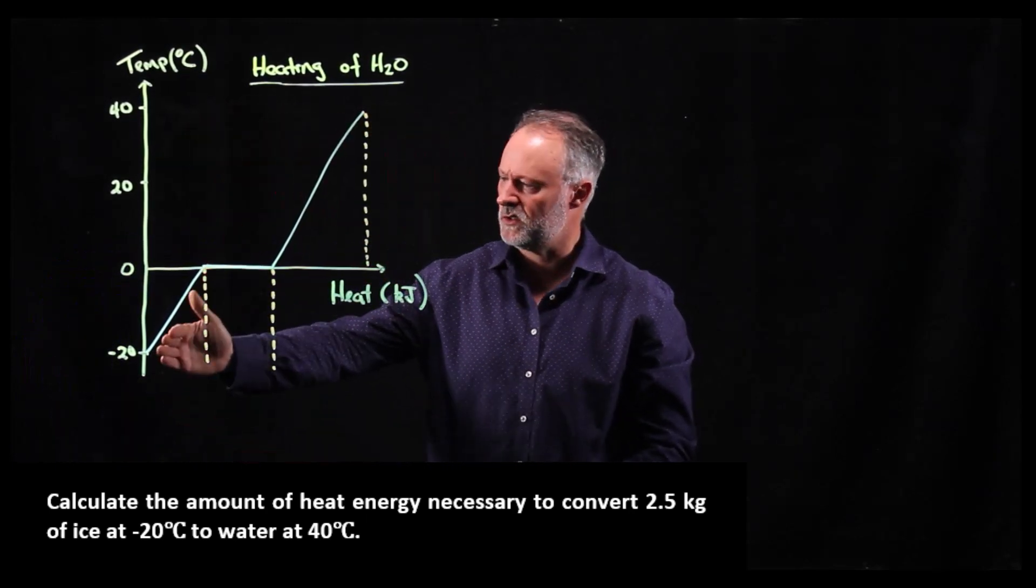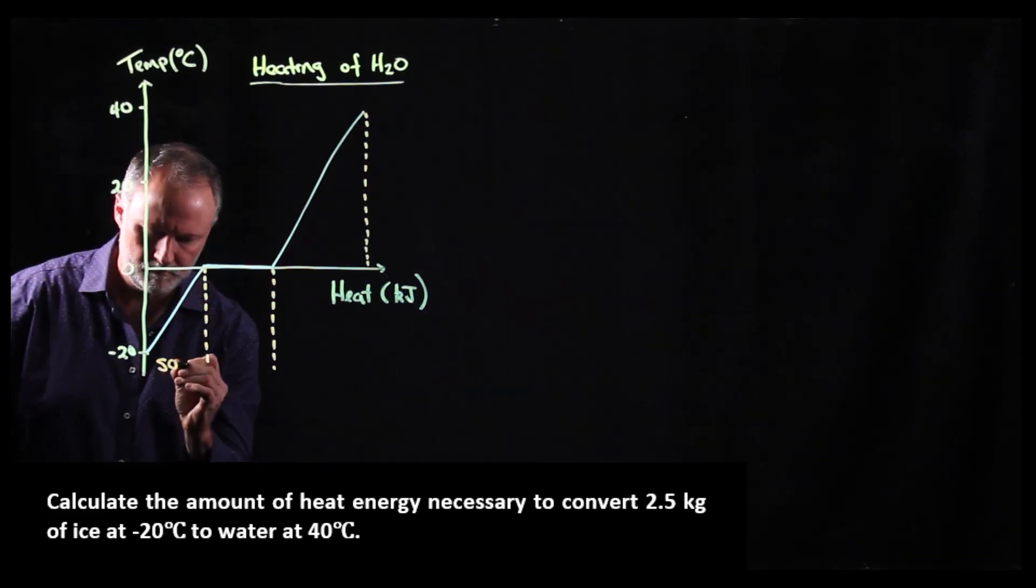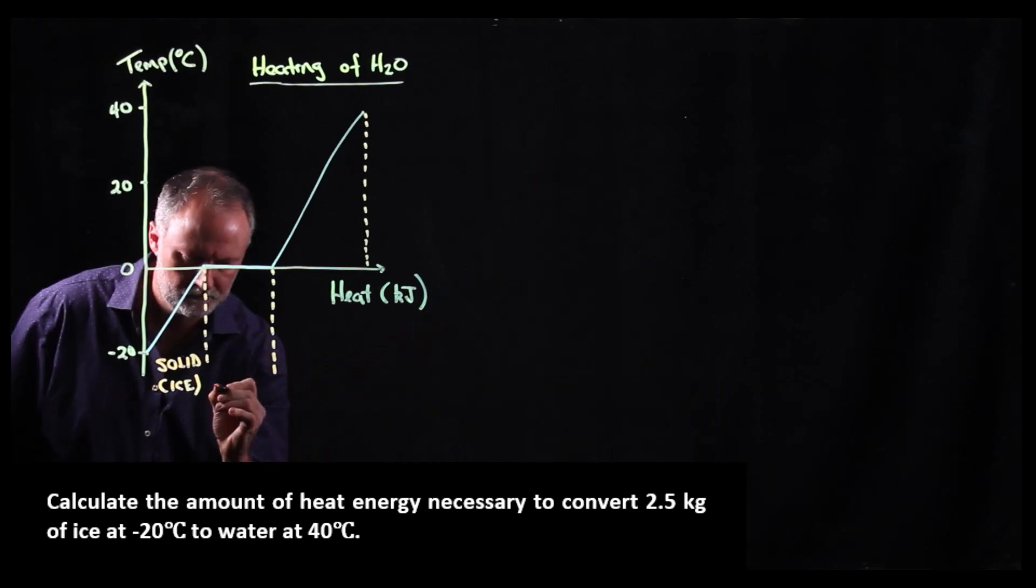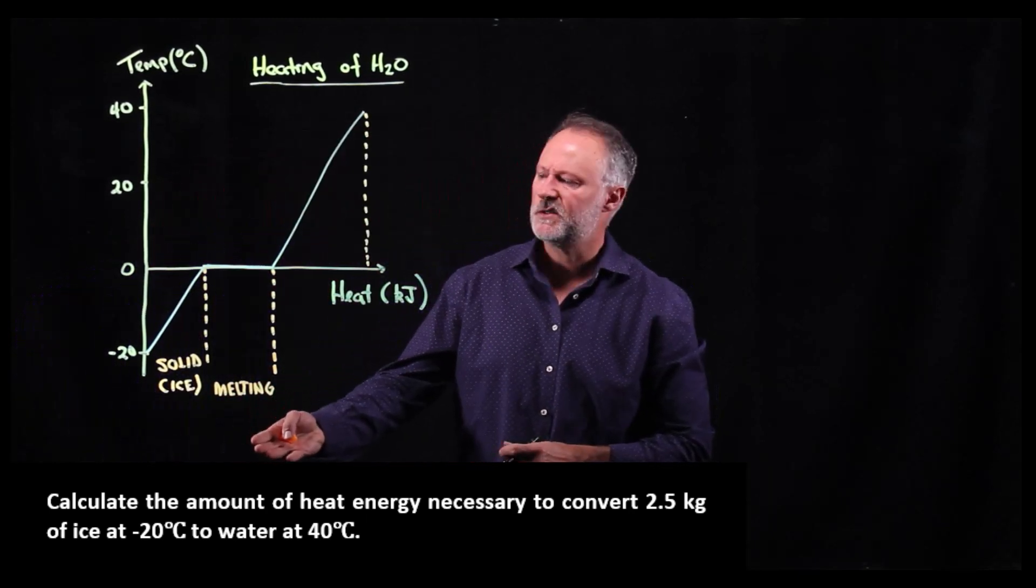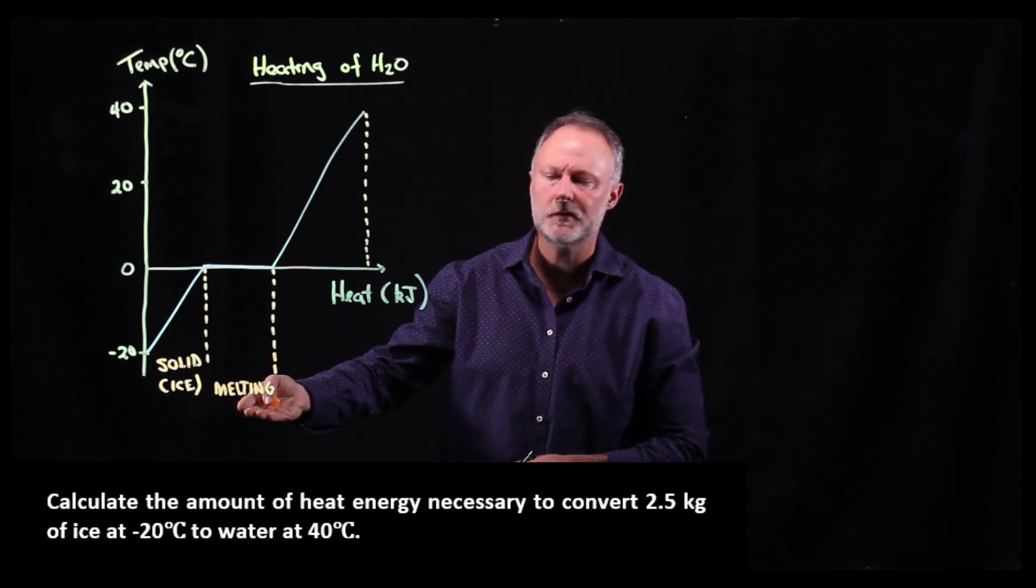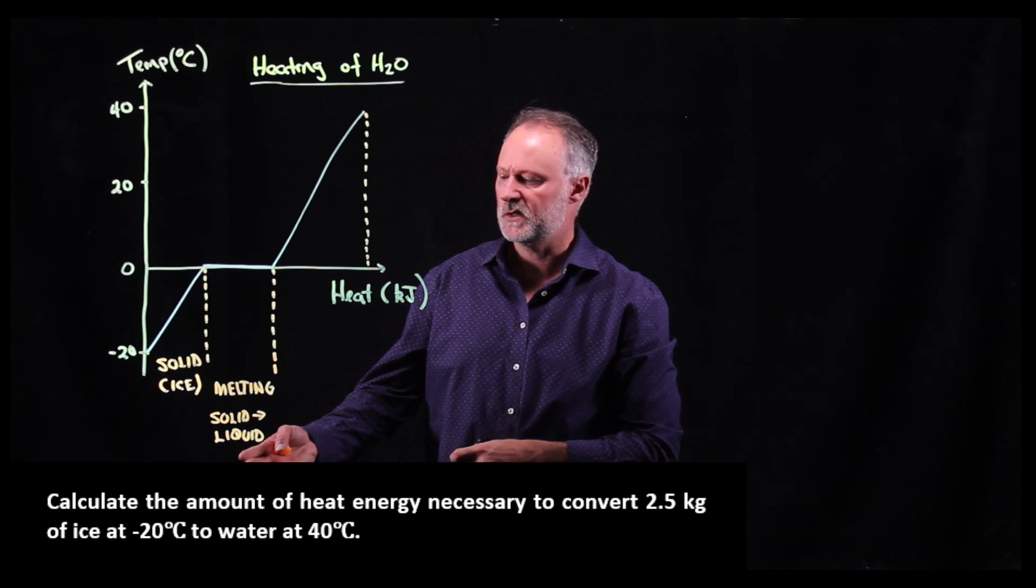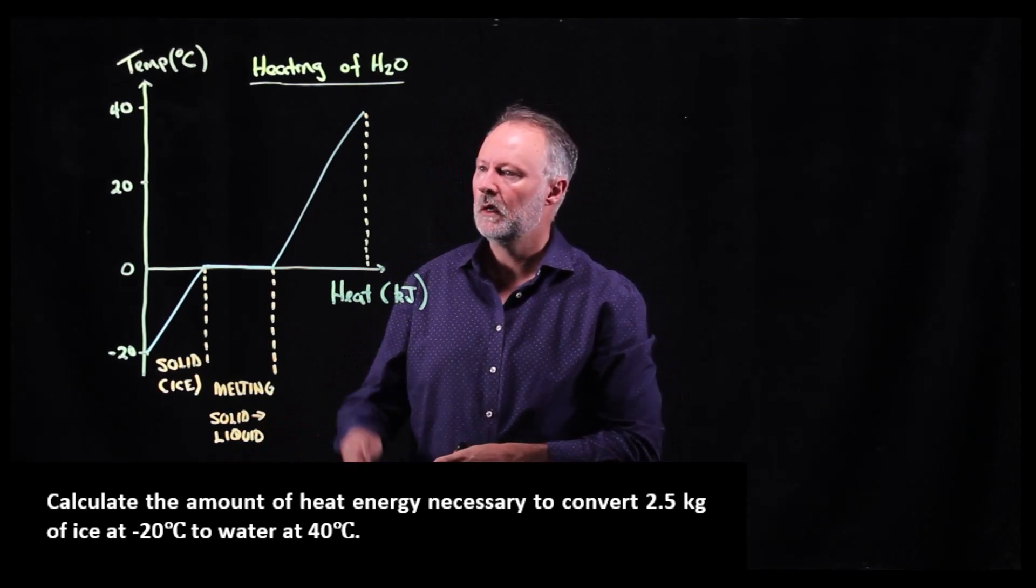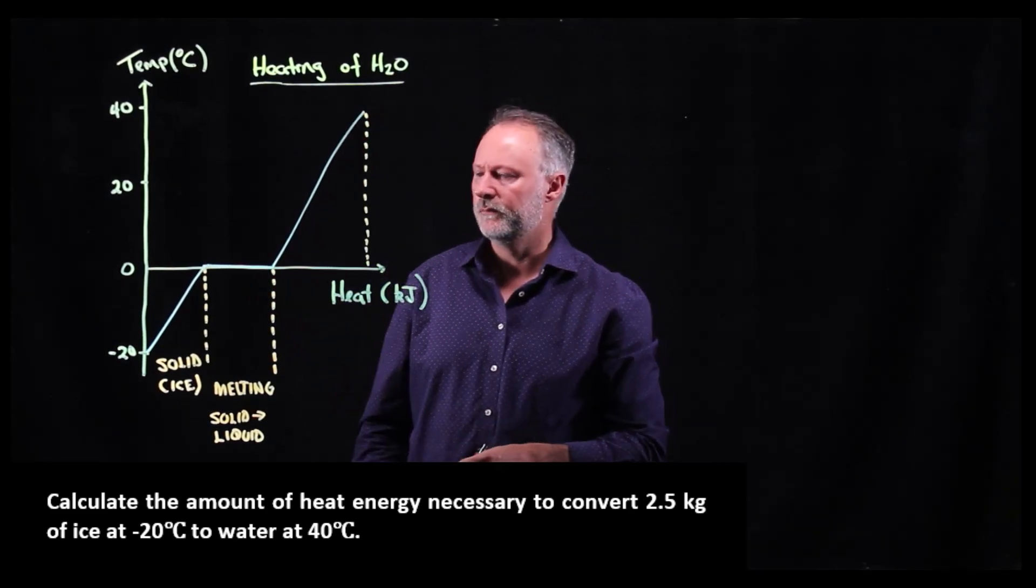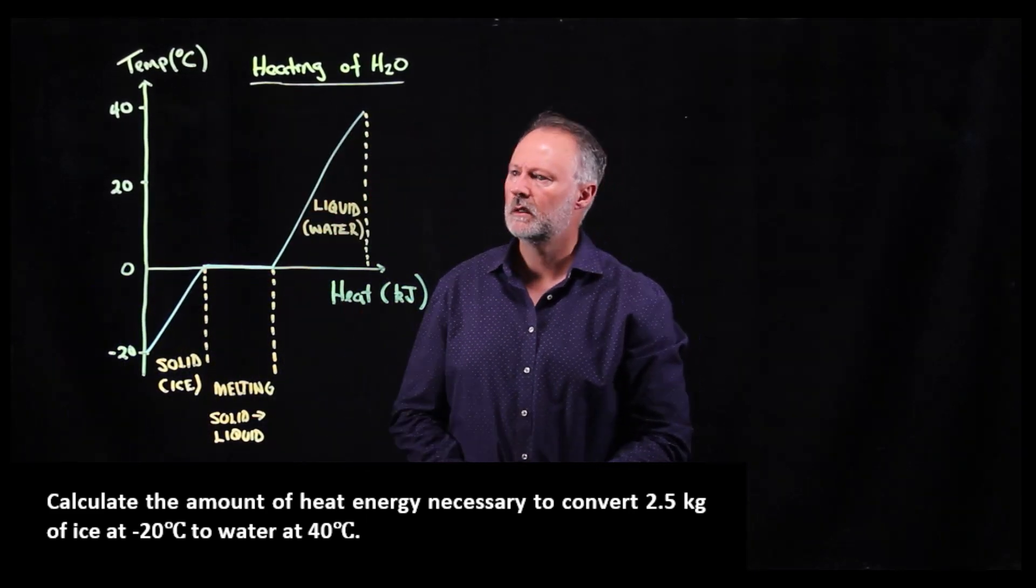This first section has a constant gradient and represents when our H2O is in a solid state. Our first section is solid H2O, we commonly refer to that as ice. This second section, where we have it along the zero temperature, is flat and we describe this as melting. It's a change of phase where a solid is converting into a liquid. Our third section is again a constant gradient and represents the region of liquid, what we commonly refer to as water. Let's examine these in more detail.